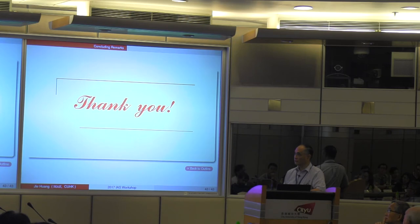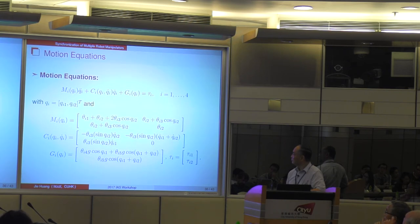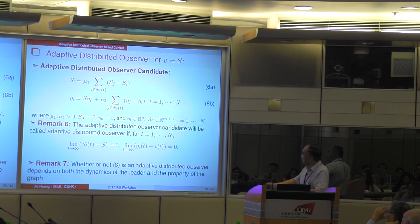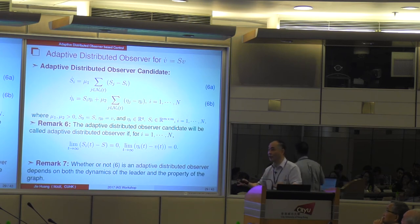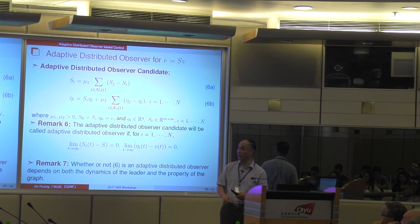This design framework has nothing to do with the number of agents, but for each agent, when you do estimation, you estimate the state information. If the communication channel provides more than one signal but you can estimate only one channel, you can see from the structure of the observer that for each i, it takes the information of all its neighbors. It doesn't matter — as long as the graph is jointly connected, it works. You don't have to take all the information. However, usually we assume that we don't know how many neighbors we have, so we cannot just pick a few neighbors.